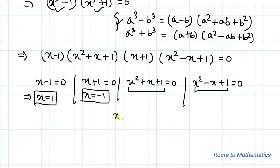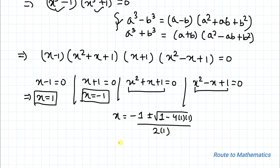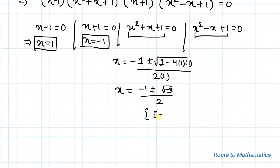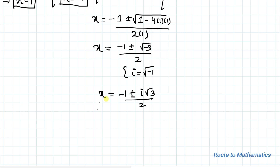For x squared plus x plus 1 equals 0, applying the quadratic formula: x equals (minus 1 plus or minus root of 1 minus 4) divided by 2, which gives x equals (minus 1 plus or minus root of minus 3) divided by 2. Since iota equals root of minus 1, we can write x equals (minus 1 plus or minus iota root 3) divided by 2. So x₃ equals (minus 1 plus iota root 3) divided by 2.